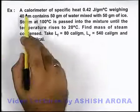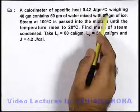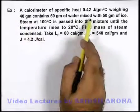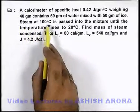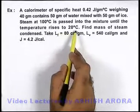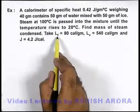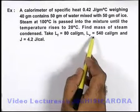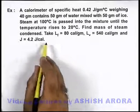In this example, we are given that a calorimeter of specific heat 0.42 joule per gram degree centigrade, which is weighing 40 grams, contains 50 grams of water mixed with 50 grams of ice. Steam at 100 degree centigrade is passed into the mixture until the temperature rises to 20 degree centigrade. We are required to find the mass of the steam condensed. Latent heat of fusion for ice is 80 calories per gram, latent heat of vaporization for steam is 540 calories per gram, and J, the mechanical equivalent of heat, is 4.2 joule per calorie.